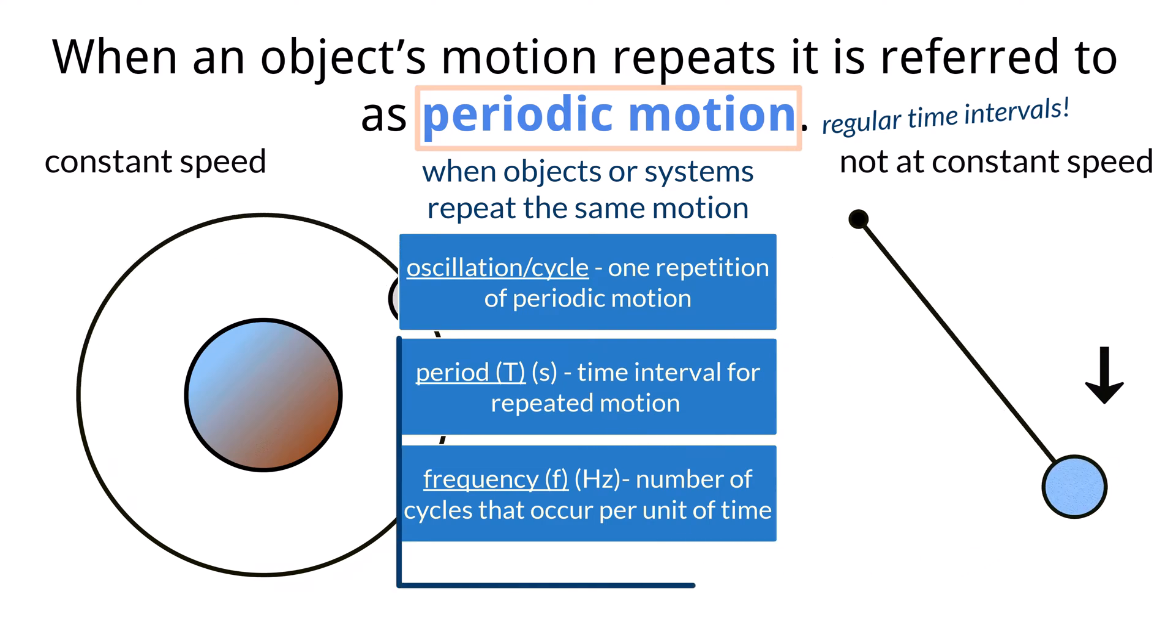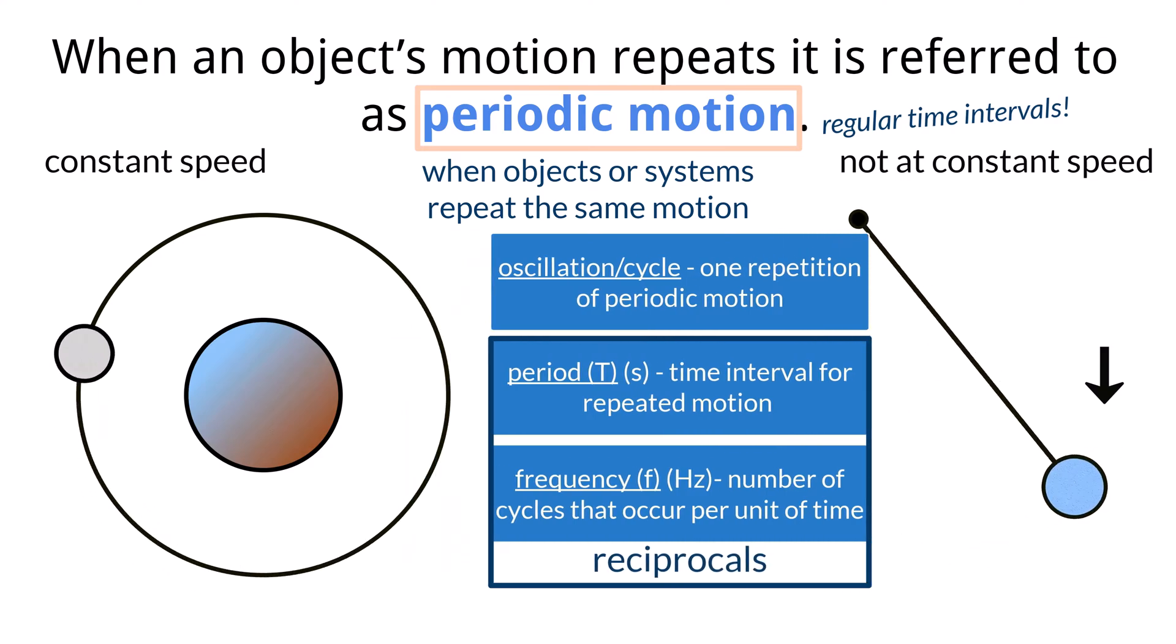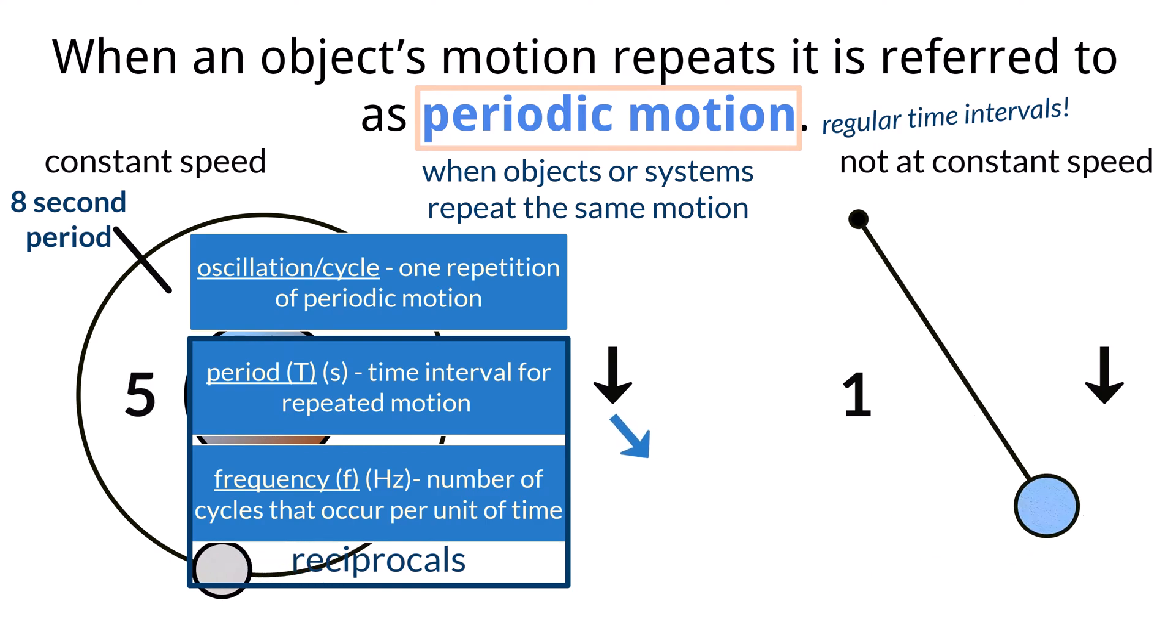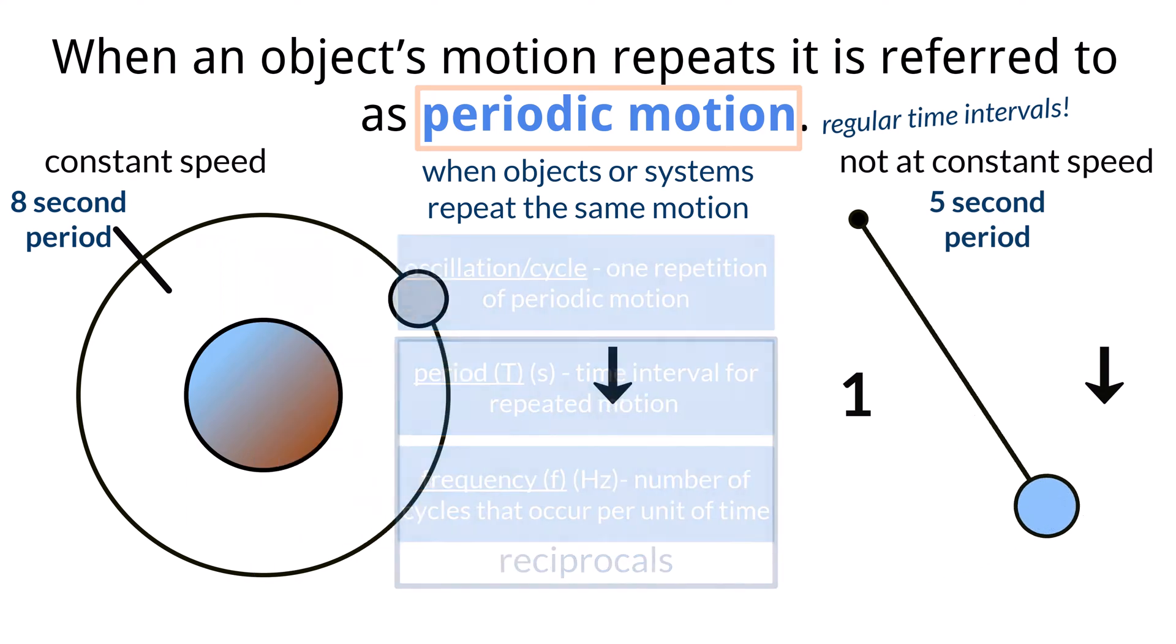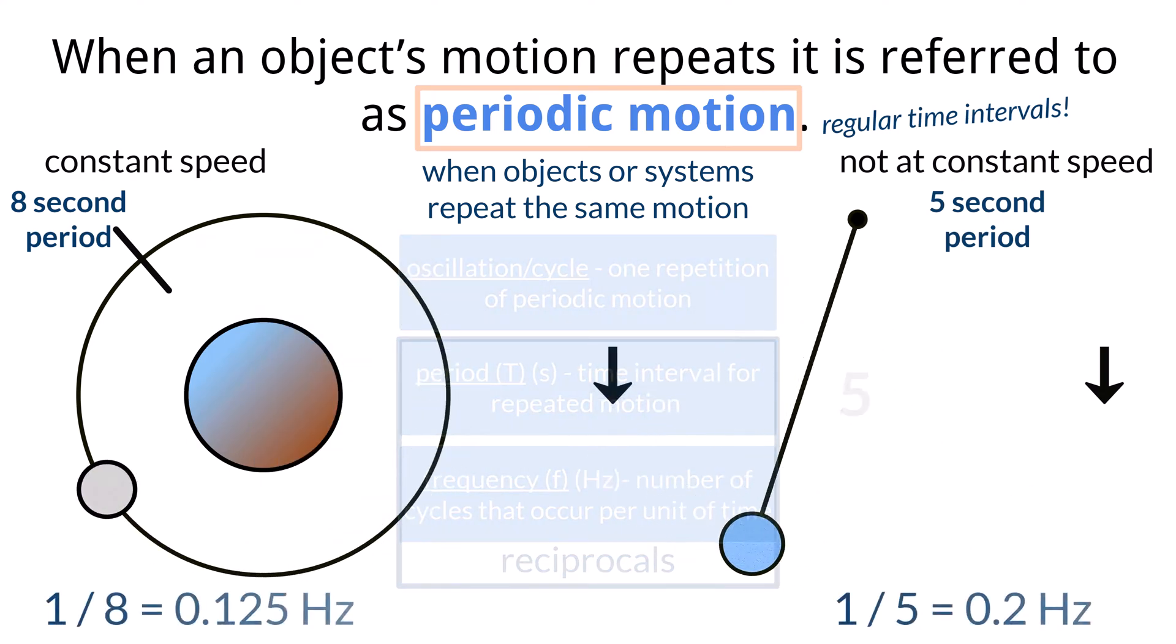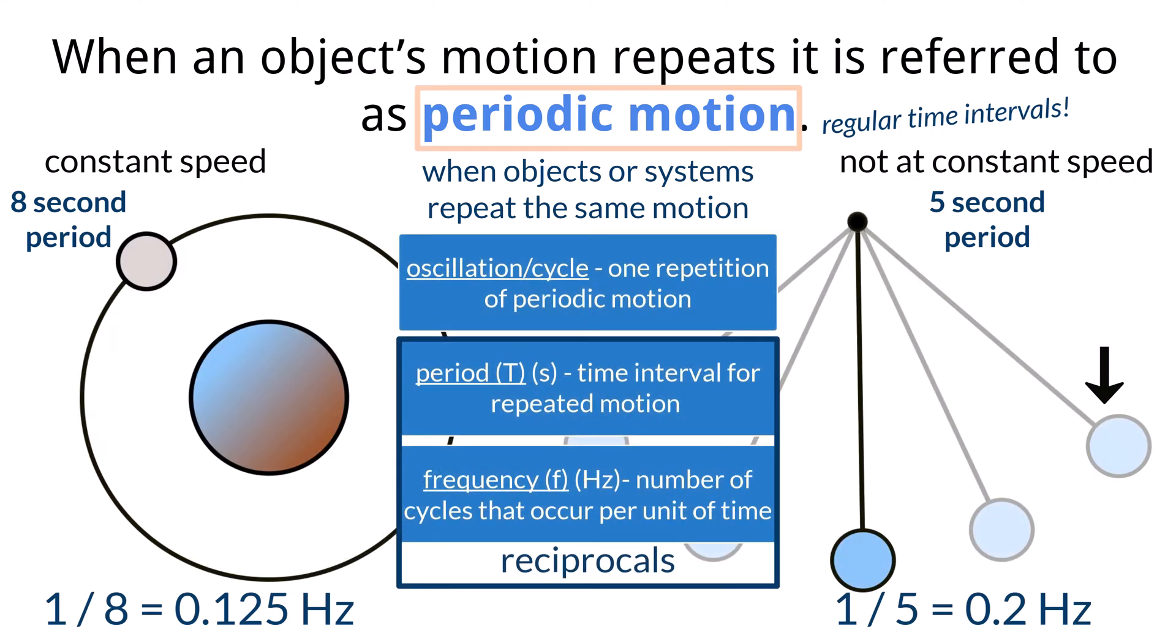The relationship between these two variables is that they are reciprocals. In the example of the planet, the period of the planet around the star is how long it takes to complete one revolution around the planet. In the ball on the string, the period would be the time it takes to swing back and forth one time. The frequency can be found by taking the reciprocal of the period as you can see there. These two concepts will turn up quite often in wave mechanics as well as modern physics and rotational mechanics.